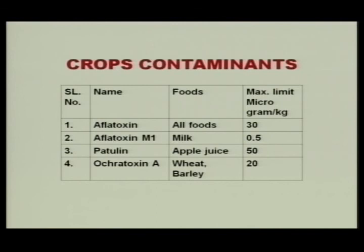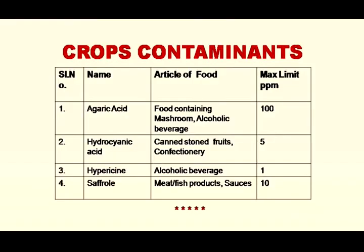For crop contaminants: aflatoxin for all food 30 ppb, aflatoxin M1 for milk 0.5 ppb, patulin in apple juice 50 ppb, ochratoxin A for wheat and barley 20 ppb. Naturally occurring substances: agaric acid in food containing mushroom or alcoholic beverages 100 ppm; hydrocyanic acid in stone fruits and confectionery 5 ppm; hypericine in alcoholic beverages 1 ppm; safrole in meat and fish products 10 ppm.